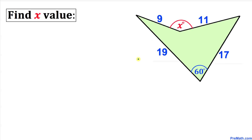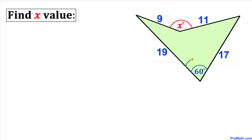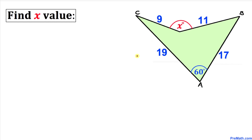Welcome to pre-math. In this video tutorial we have a quadrilateral whose side lengths are 19, 9, 11, and 17. Moreover, the angle between two of these sides is 60 degrees, and we are going to find the angle x between the other two sides. Let's get started with our solution.